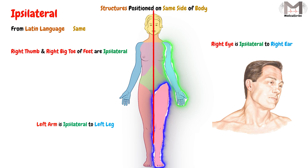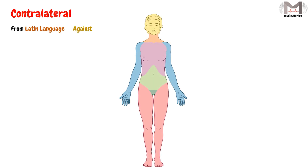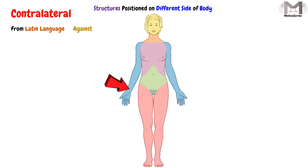So the meaning of ipsilateral is 'on the same side of the body.' While contralateral means the other side — it is also derived from the Latin language and means 'against.' It is used to describe structures where each one is positioned on one side of the body — one structure on the right side while the other is on the left side.